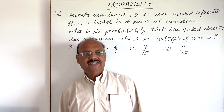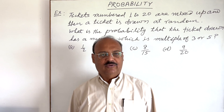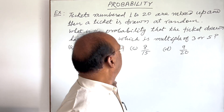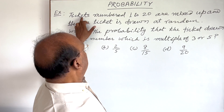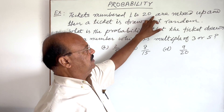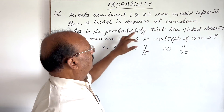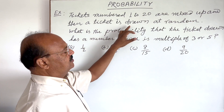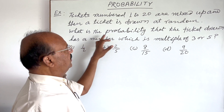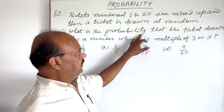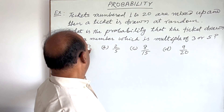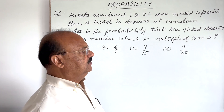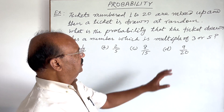Welcome students. Let us see a very important question from the chapter probability. Tickets numbered 1 to 20 are mixed up and then a ticket is drawn at random. What is the probability that the ticket drawn has a number which is a multiple of 3 or 5?